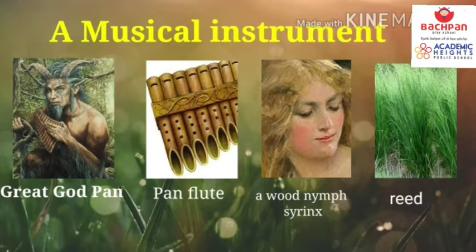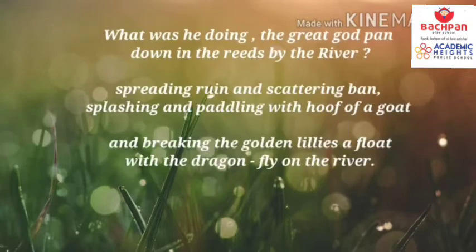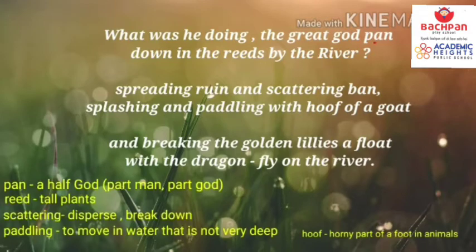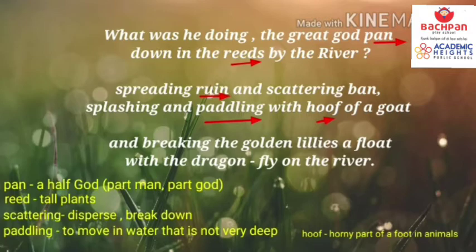Let's understand the poem. 'What was he doing, the great god Pan, down in the reeds by the river? Spreading ruin and scattering ban, splashing and paddling with the hoof of a god, and breaking the golden lilies afloat with the dragonfly on the river.' First of all we will understand the meaning of some words: Pan means a half-god, part man and part god. Reeds are tall plants. Scattering means to disperse or break down things. Paddling means to move in water that is not very deep.